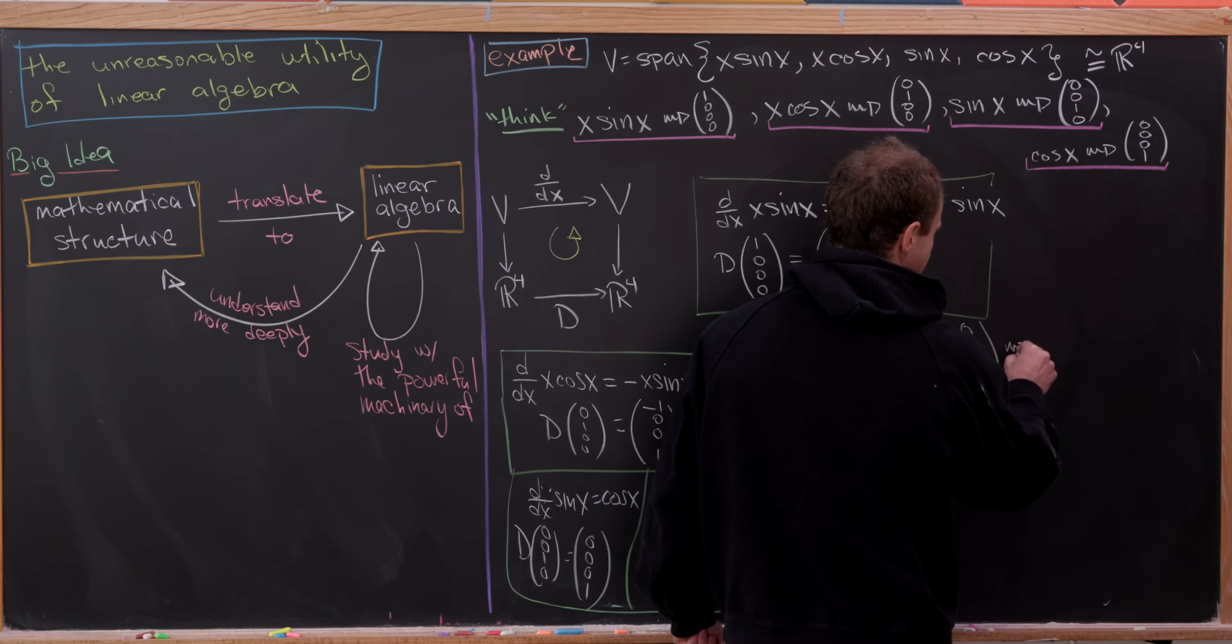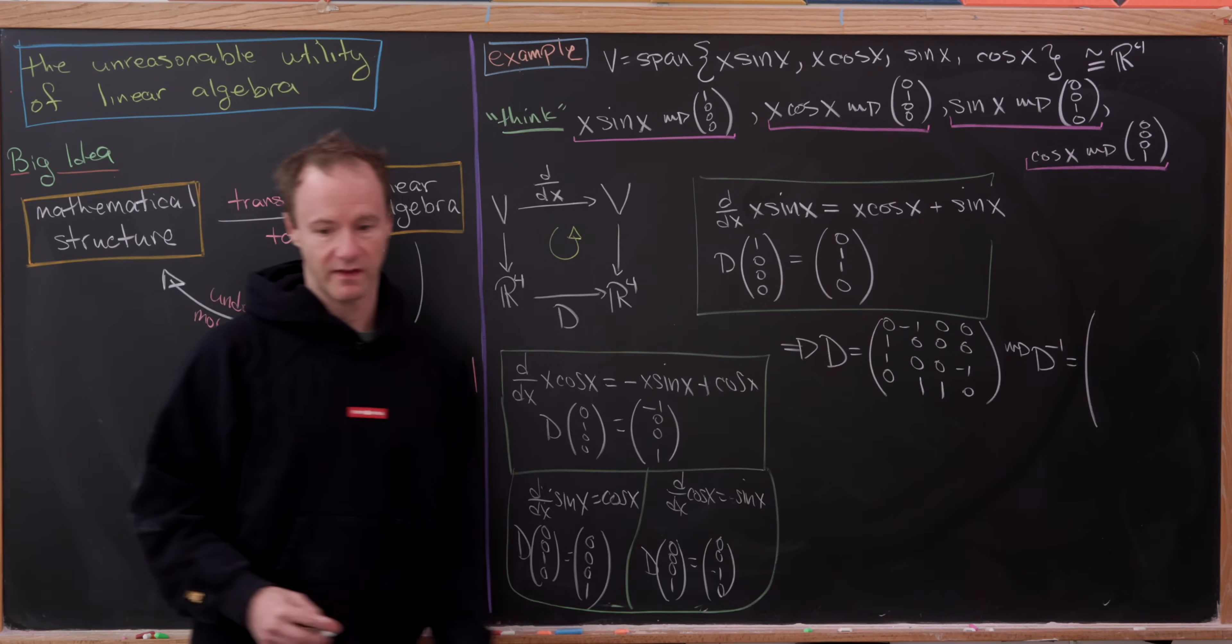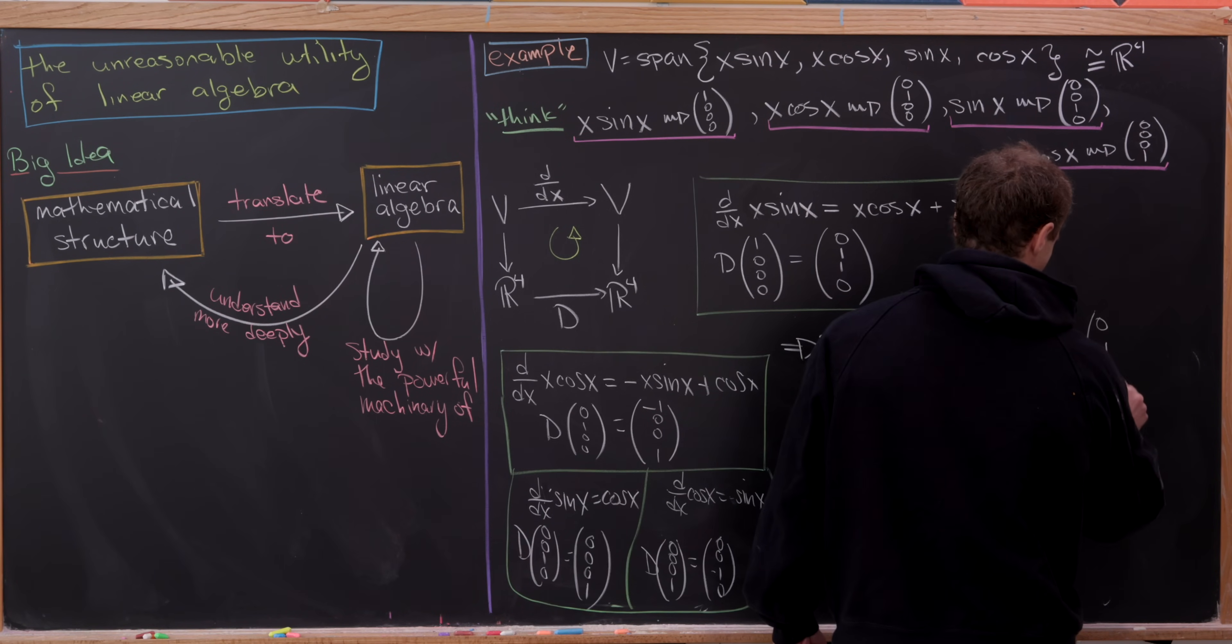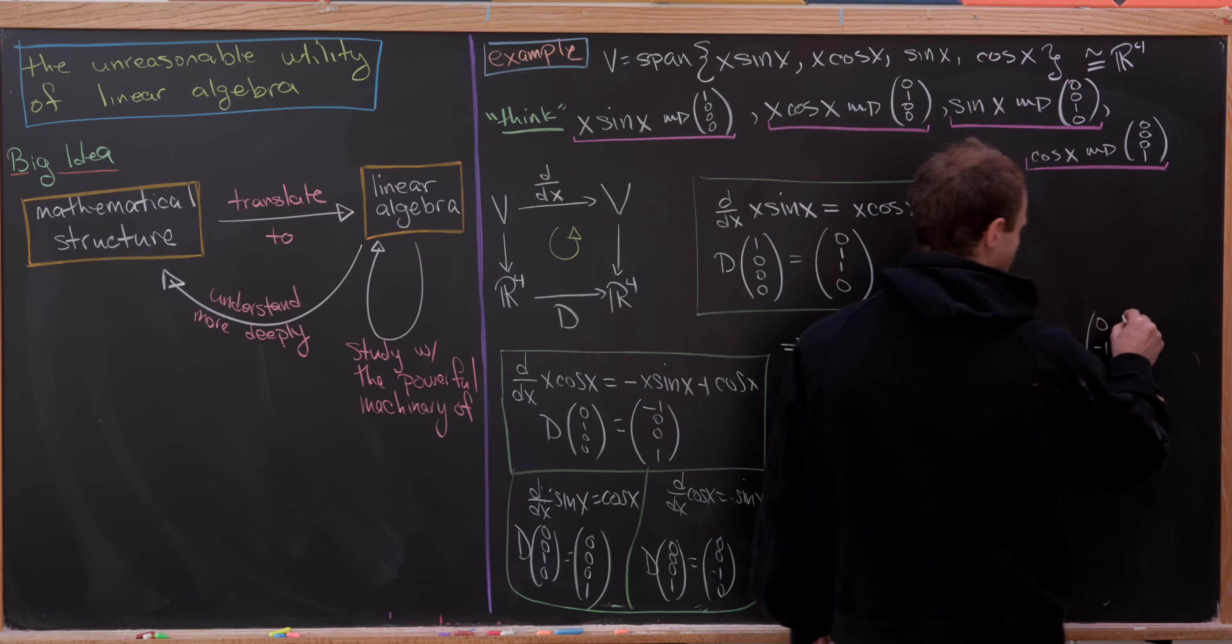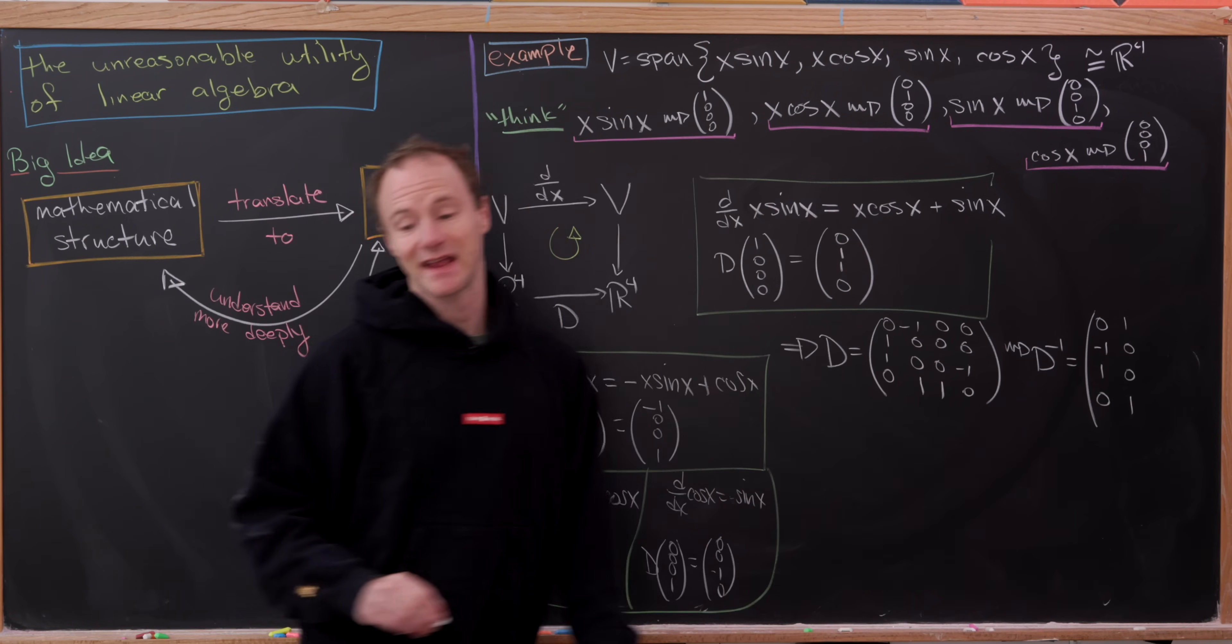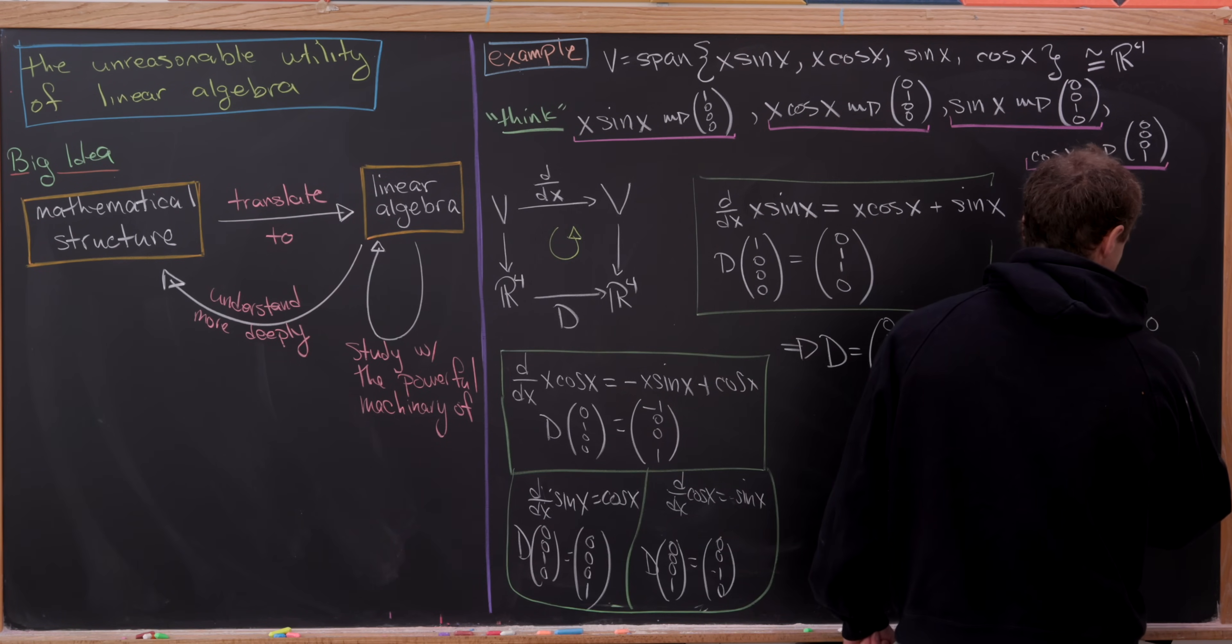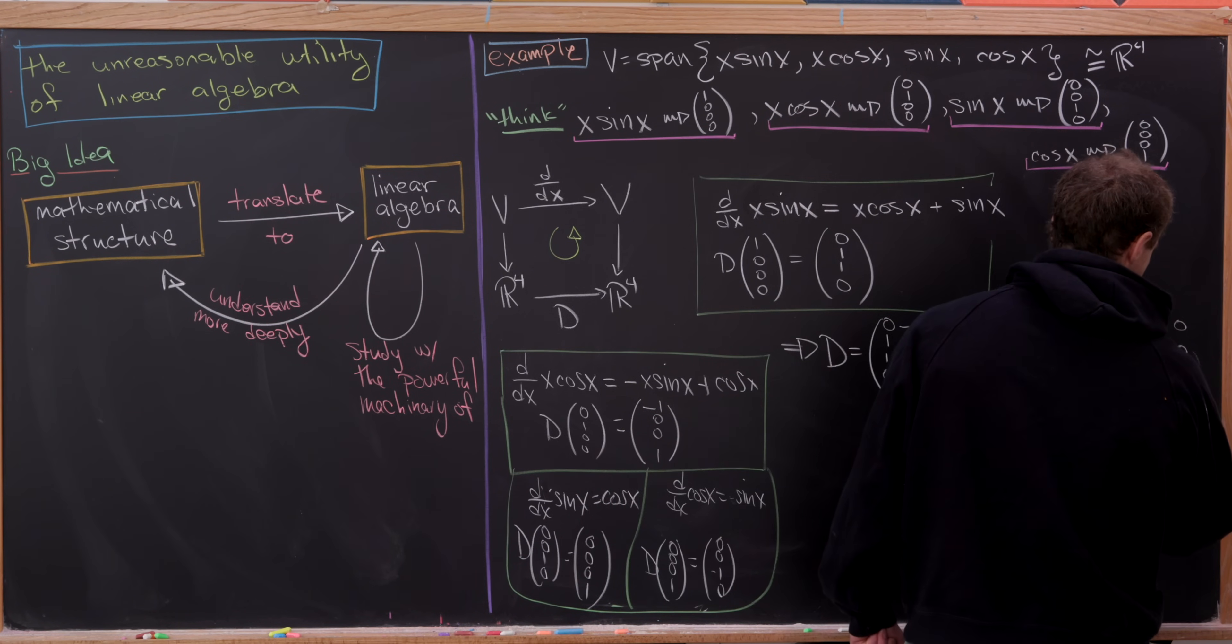And I won't go through the details here, but D inverse can fairly easily be calculated to be 0, negative 1, 1, 0. That's our first column. And then 1, 0, 0, 1. That's our second column. And then 0, 0, 0, negative 1. And then finally, 0, 0, 1, 0.